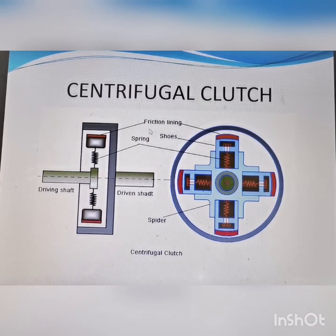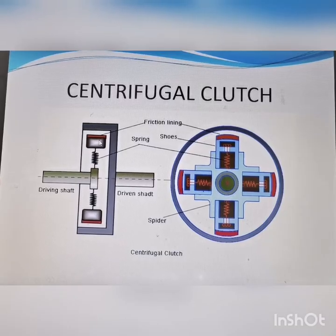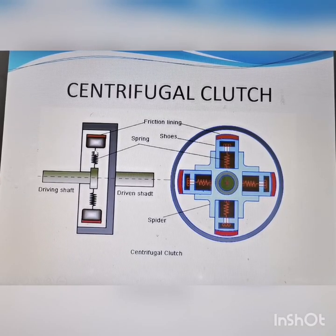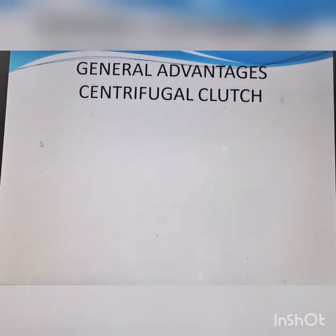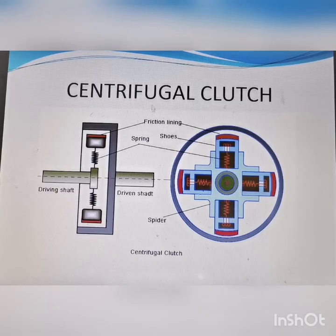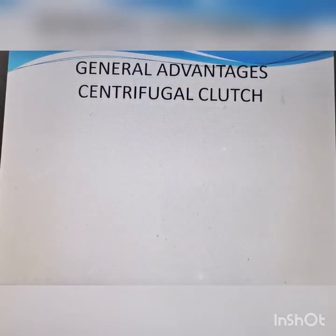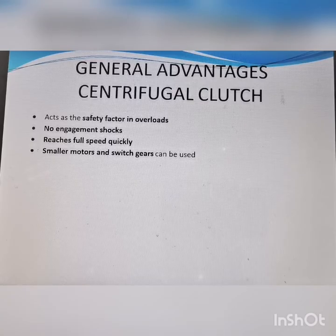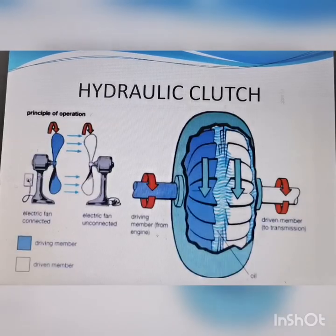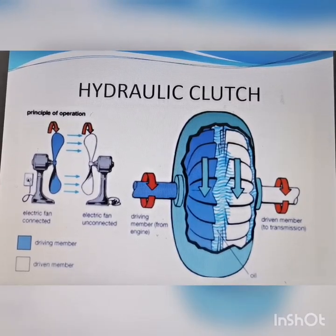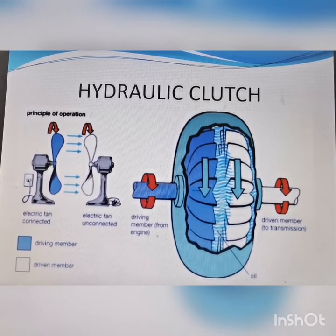The function of the spring is to keep the weight away from the drum until the required speed is reached. Once the centrifugal force exceeds the spring force, the slippers engage the drum. Advantages of the centrifugal clutch include: it acts as a safety device against overload, no engagement shocks, quick reach to full speed, and smaller motors and switchgear can be used.